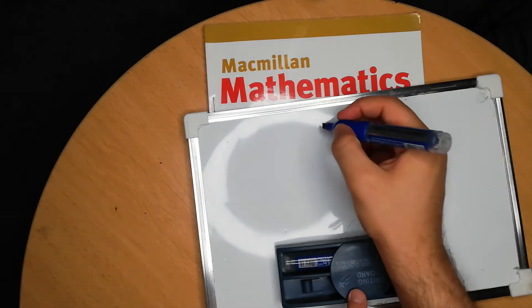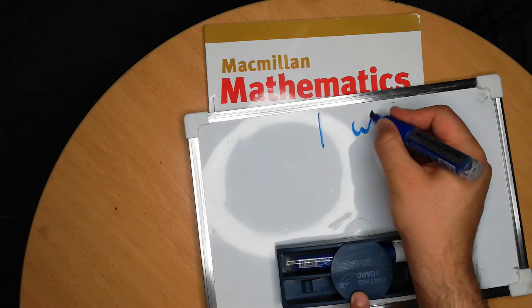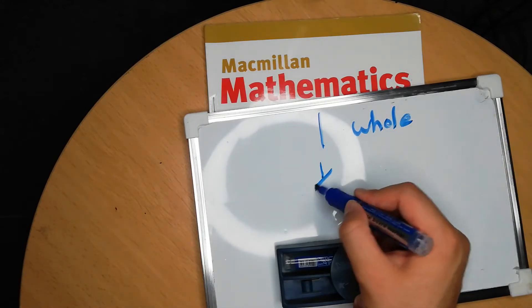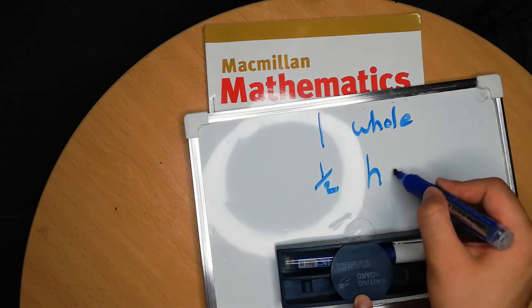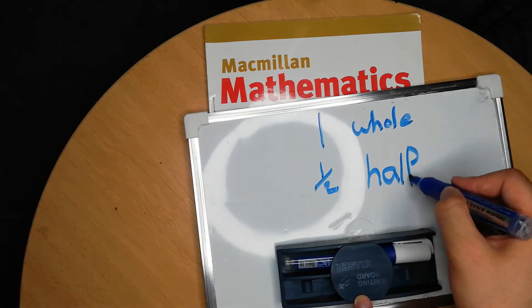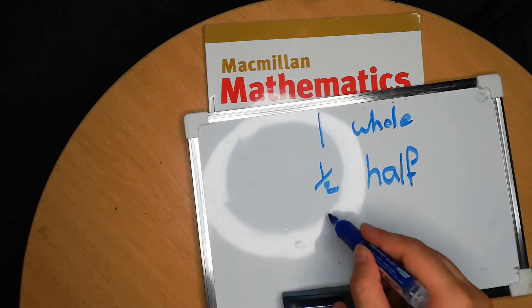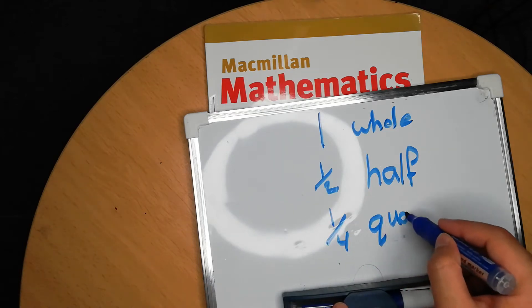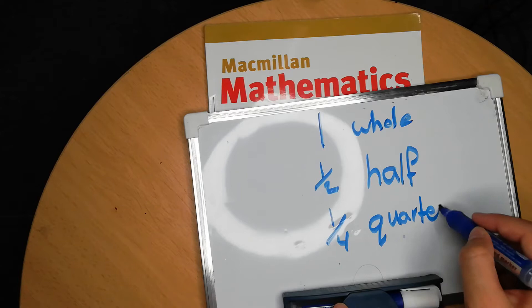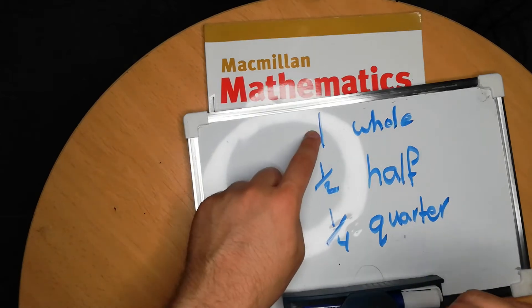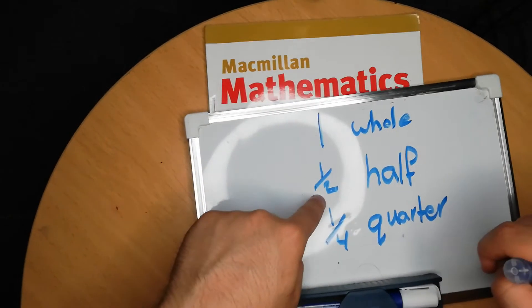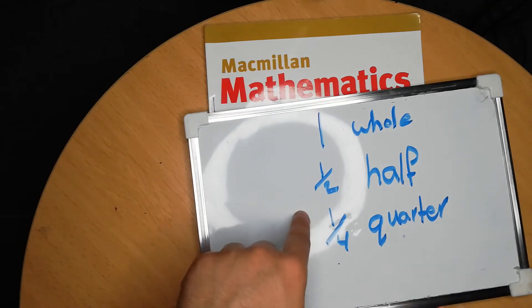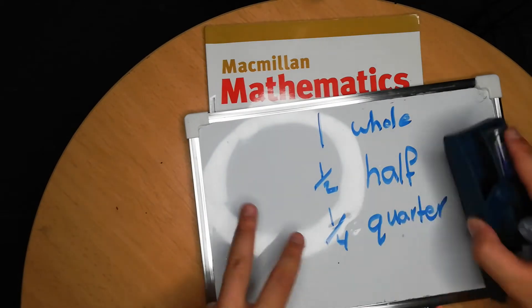So we have: whole, half, and quarter. A whole is one. Half is two equal pieces of a whole. Quarter is four equal pieces of a whole.